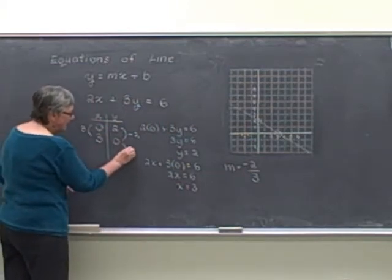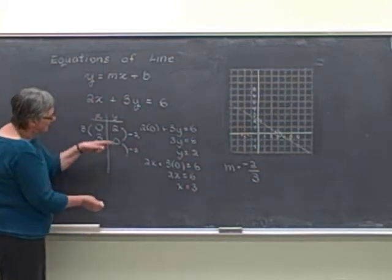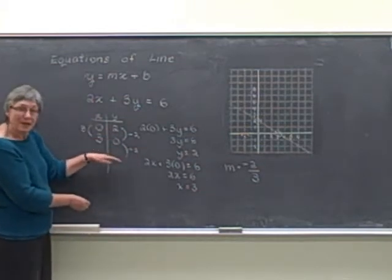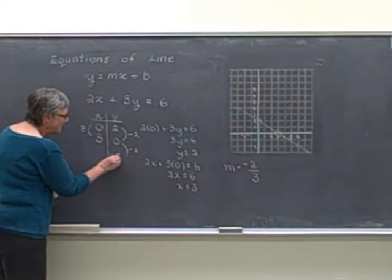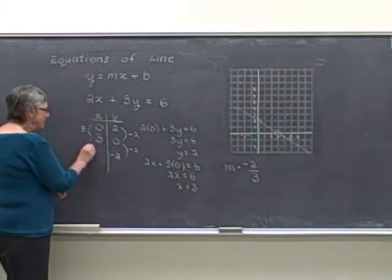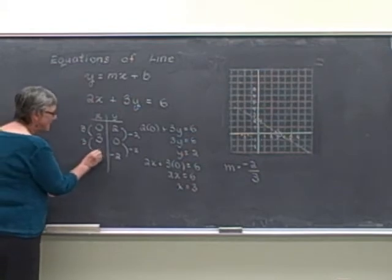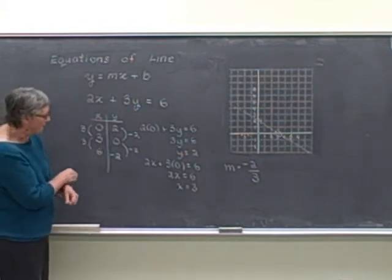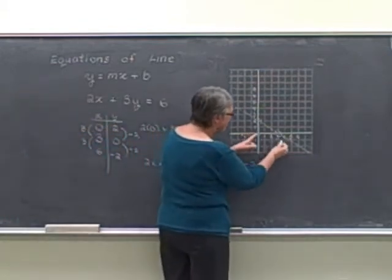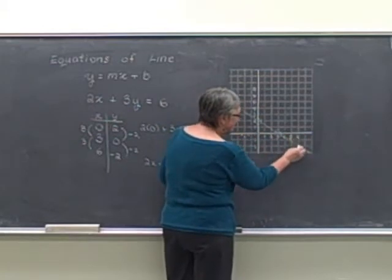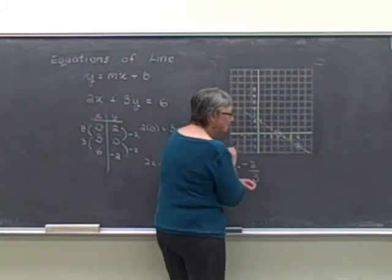Here, change of y of negative 2. If I'm going down 2 from 0, that means my new y value is negative 2. And if my change in x is 3, I'm going up 3 from the 3, that gives me the point 6, negative 2. And let's just check my graph. Here I am at 6, negative 2. And that's another point in the graph.